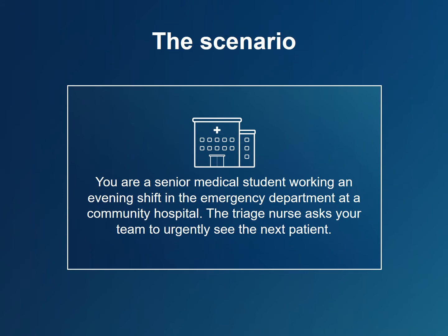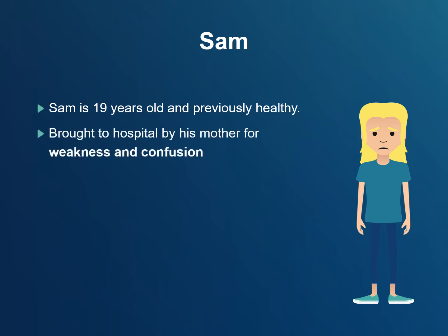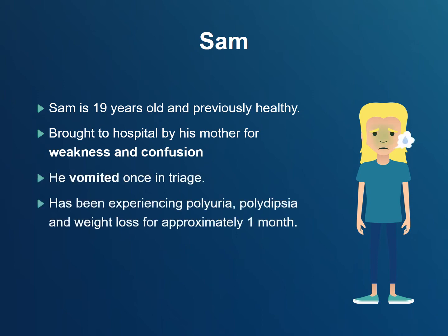You are a senior medical student working an evening shift in the emergency department at a community hospital. The triage nurse asks your team to urgently see the next patient. Meet Sam. Sam is 19 years old and is healthy. He is brought to the hospital by his mother with weakness and confusion. He vomited once in triage. He has been experiencing polyuria, polydipsia, and weight loss for approximately one month. Sam's mother has never seen him like this before.